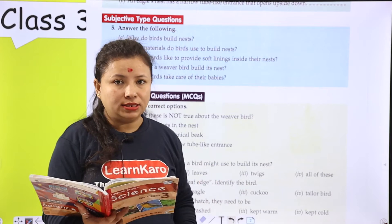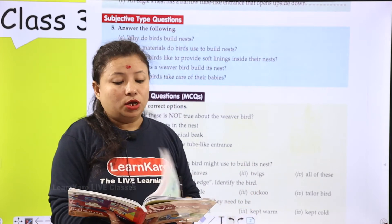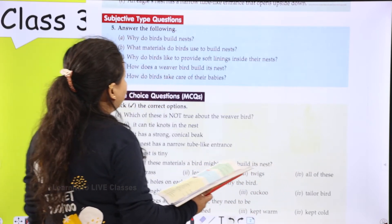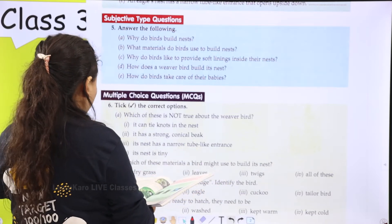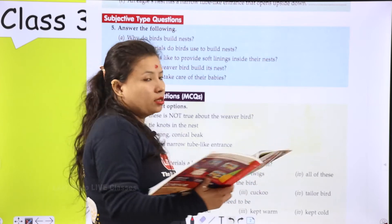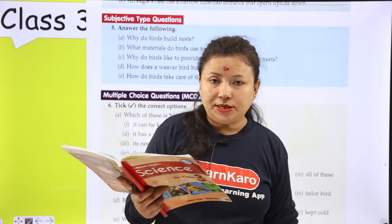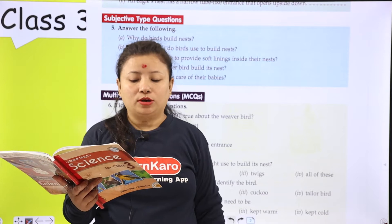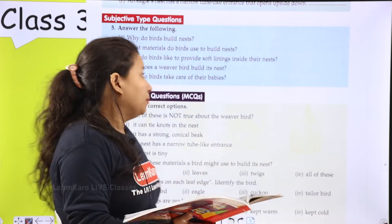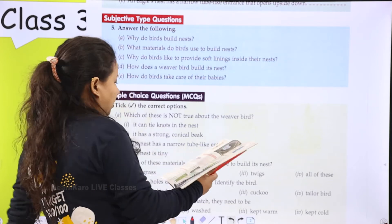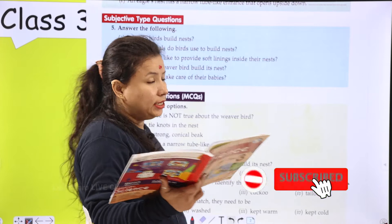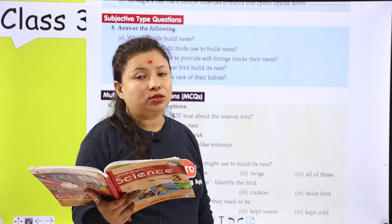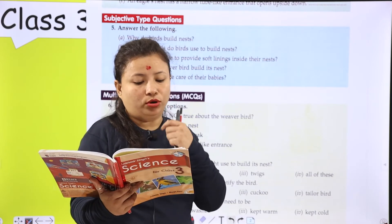Question number 2 is what materials do birds use to build nests? Birds use materials such as dry grass, leaves, twigs, cotton and scraps of cloth and wool to build nests. Birds apna nest build karne ke liye dry grass, leaves, twigs, cotton and scraps of cloth and wool ka use karti hai.